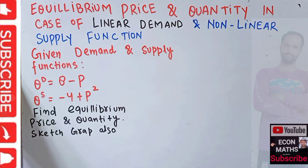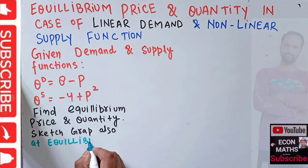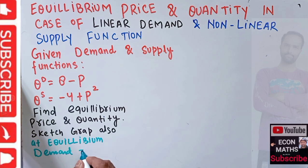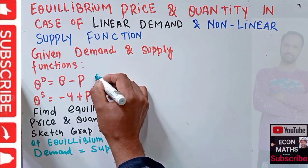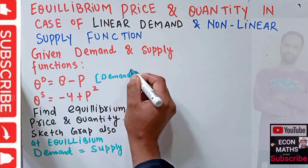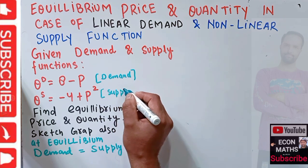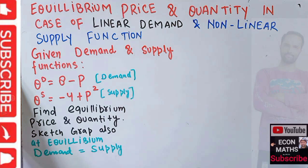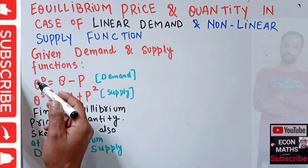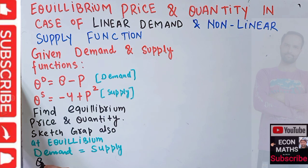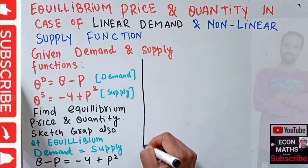We need to find the equilibrium price and quantity and also sketch the graph. At equilibrium, demand should be equal to supply. So quantity demanded equals 8 - P and quantity supplied equals -4 + P². Since the left-hand side is the same, we can equate the right-hand sides: 8 - P should be equal to -4 + P².